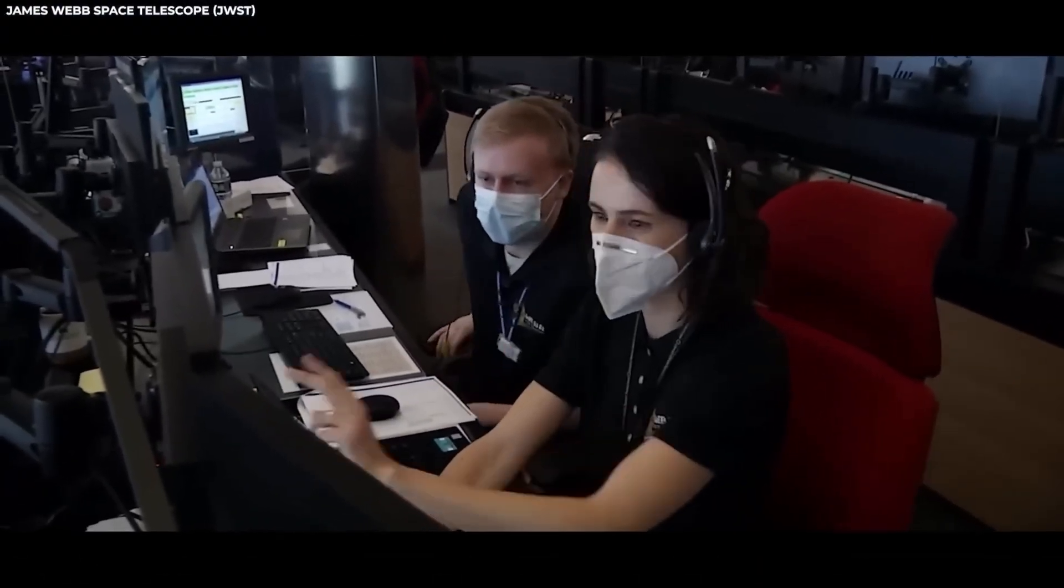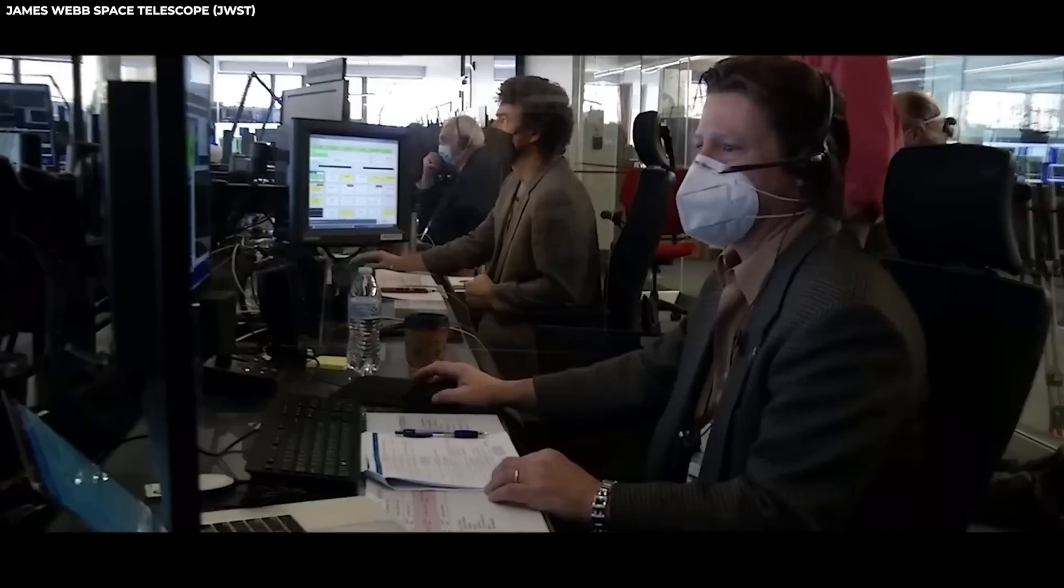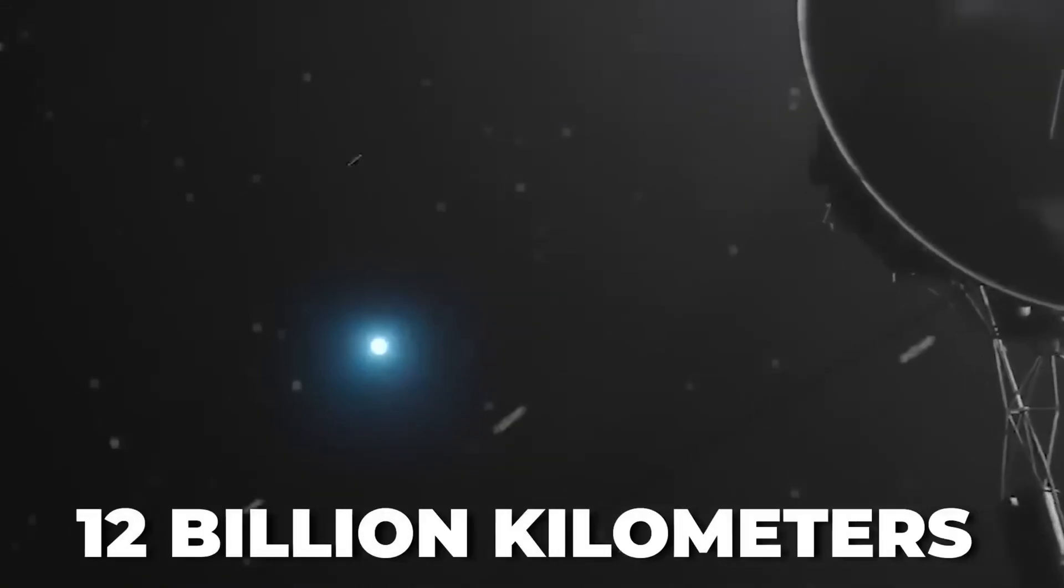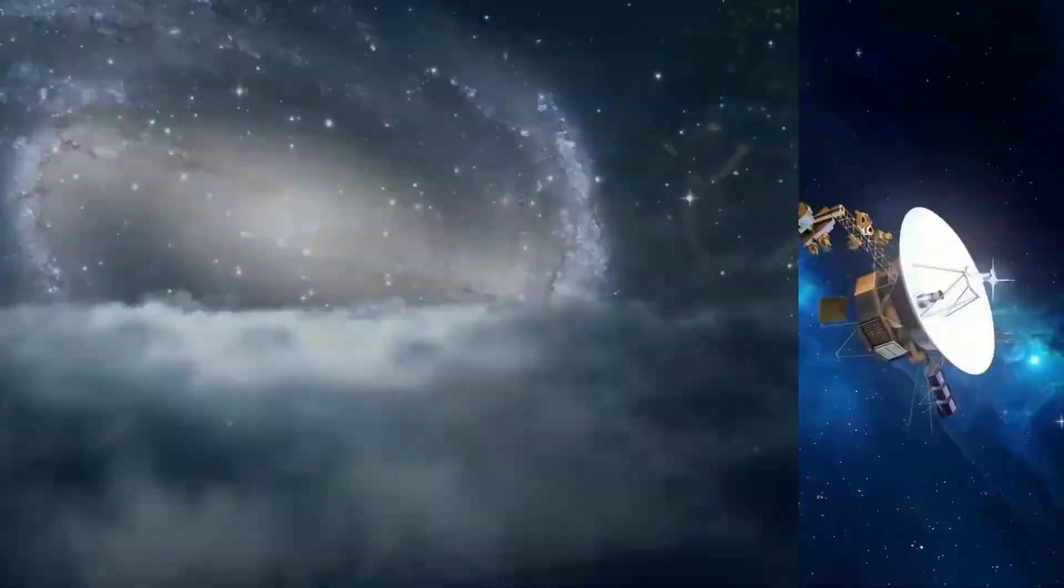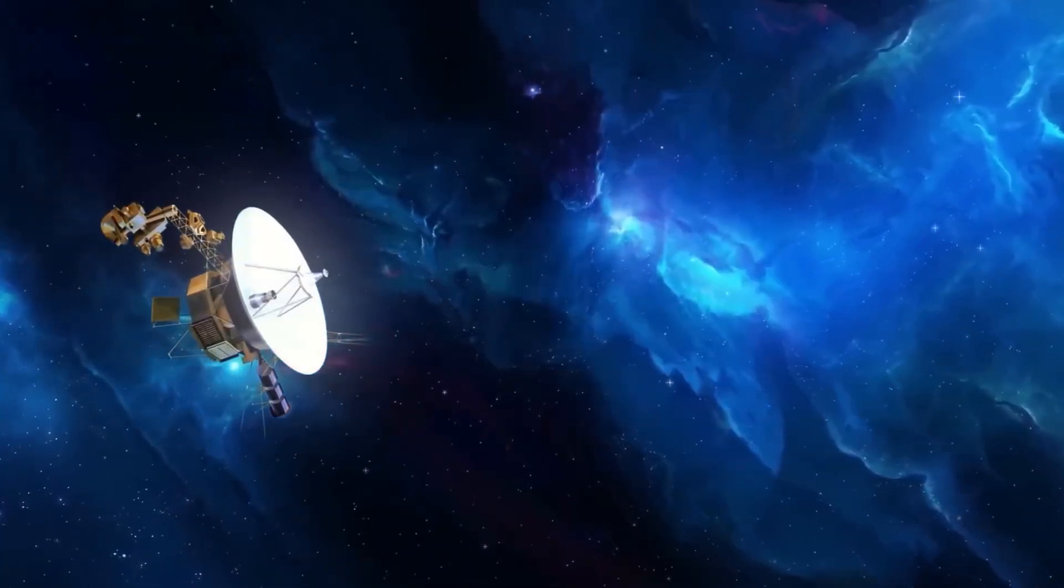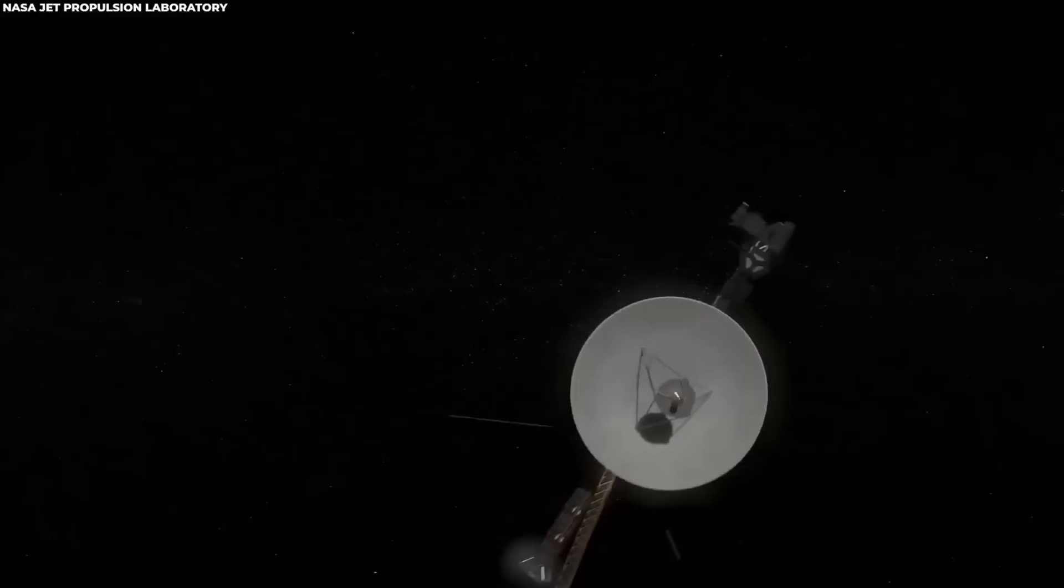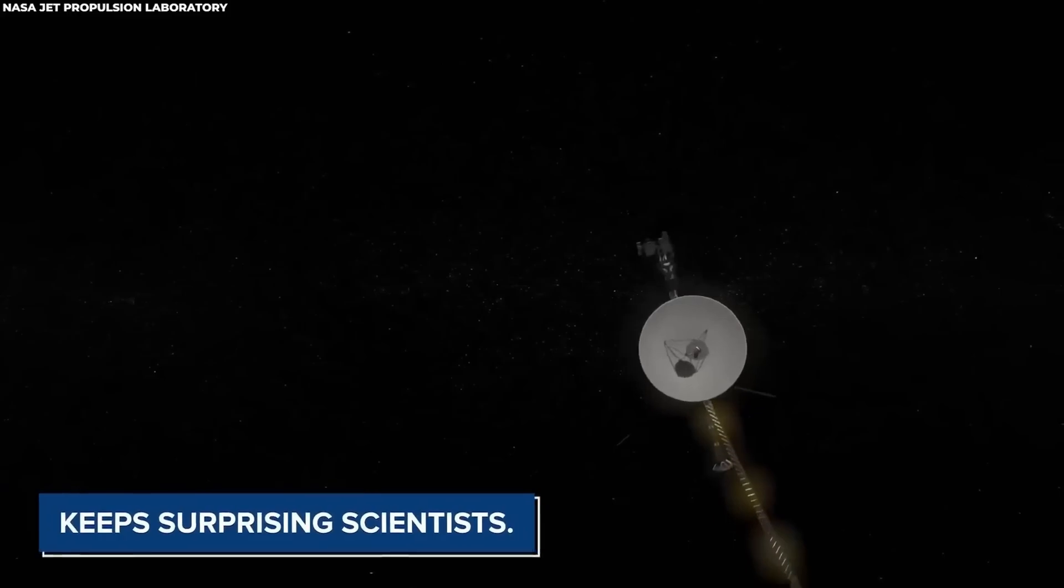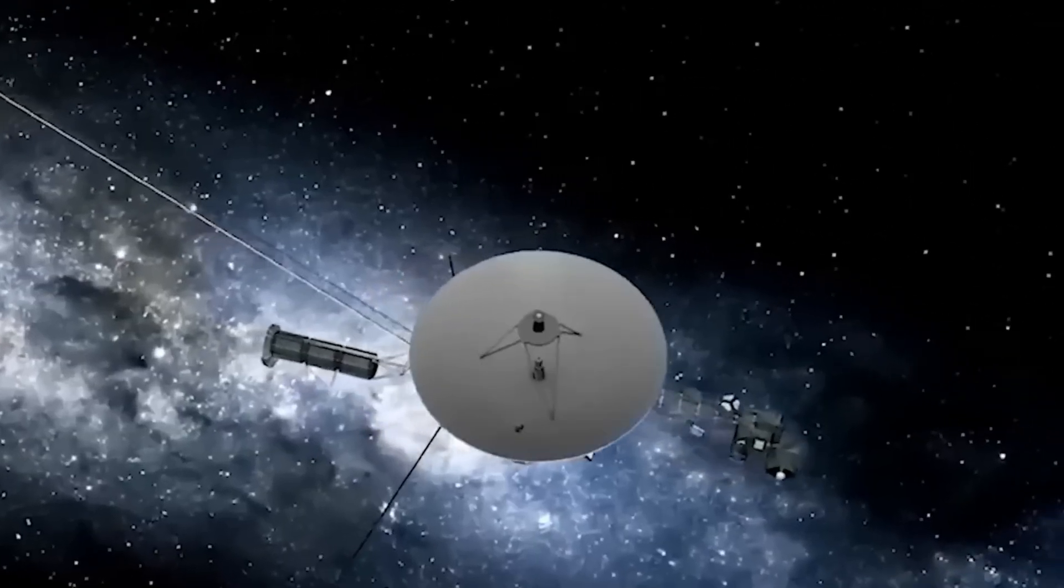Voyager 1 also captured stunning images of Saturn's moons, including the largest, Titan, providing insights into the geology and surface features of these moons, helping scientists to understand their origin and evolution. As well as observing the physical characteristics of Jupiter and Saturn, Voyager 1 took a closer look at two of the largest moons, Europa and Enceladus, and found evidence that both may have hidden oceans beneath their icy surfaces.